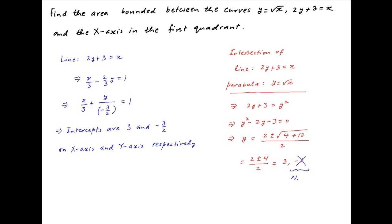y is equal to minus 1 is ruled out because we are only interested in solutions that are in the first quadrant. Putting in y is equal to 3, we get x is equal to 9. Therefore, the line and the parabola intersect in the first quadrant at the point (9, 3).